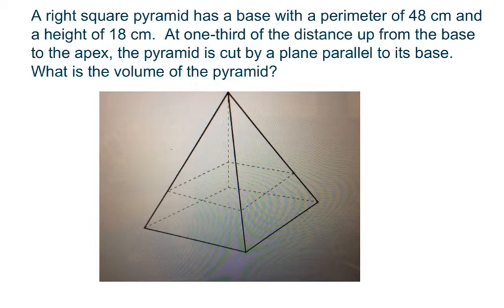All right, a right square pyramid has a base, that's that bottom part, with a perimeter of 48 centimeters. So I know there's four sides to that, so I just do 48 divided by 4, and that gives me each side is going to be 12 for my base, and it is a square, so we're all the same.